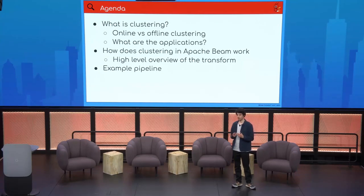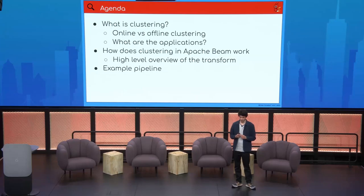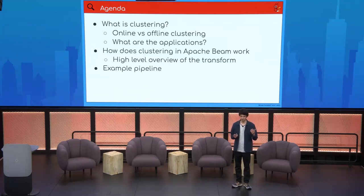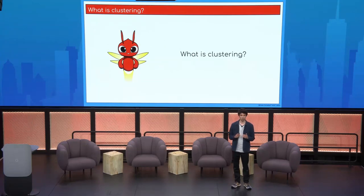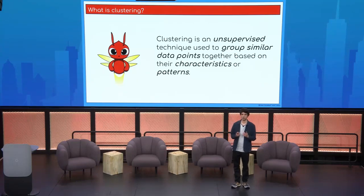We have implemented an experimental transform to cluster data in Apache Beam. We're first going to go over what clustering actually is, because I don't know if everybody is already familiar with this machine learning technique. And then we're going to look at how it's implemented in Apache Beam itself, together with an example pipeline. So the first question: what is Apache Beam and what is clustering? Clustering is an unsupervised technique to group together similar data points based on characteristics. We're going to go over this step by step.